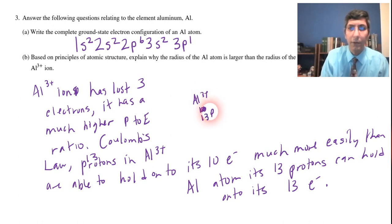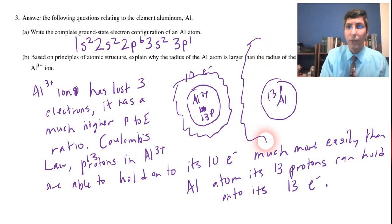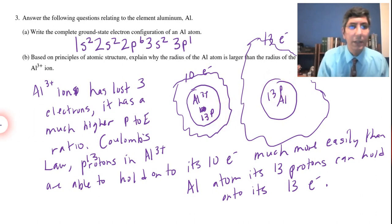According to Coulomb's law, that tells us that the protons, and by the way, there are 13 protons in that aluminum 3+ ion, are going to be able to hold on to its 10 electrons much more easily than an aluminum atom and its same 13 protons can hold on to more electrons. Because it still has 13 electrons. And so think about it in terms of Coulomb's law. You have this aluminum 3+ that's got 13 protons here in the middle. But it only has 10 electrons.